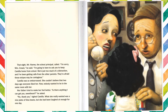That night, Mr. Harms, the school principal, said, I'm sorry, Mrs. Cream, I'm going to have to ask you to keep Camilla at home from school. She's just too much of a distraction, and I've been getting calls from other parents. They're afraid the stripes might be contagious. Camilla was so embarrassed. She couldn't believe that two days ago everyone liked her, and now nobody wanted to be in the same room with her. Her father tried to make her feel better. Is there anything I can get you, sweetheart, he asked. No, thank you, said Camilla. What she really wanted was a nice plate of lima beans, but she had been laughed at enough for one day.